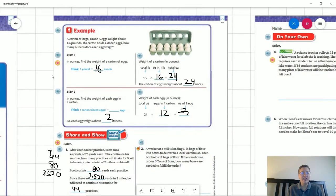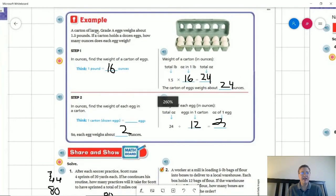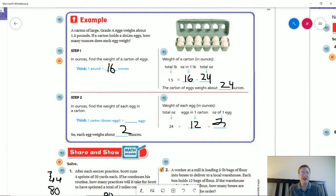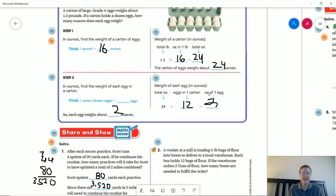So the next one, a carton of eggs weighs about 1.5 pounds, if a carton holds a dozen eggs how many ounces does each egg weigh? So this is a two-step problem. The first step we want to figure out how many ounces we have so 1.5 pounds times 16 gives us 24 ounces and then we are going to divide that by the number of eggs which is 12, so 24 divided by 12 would give us 2.